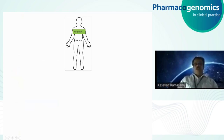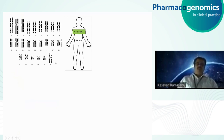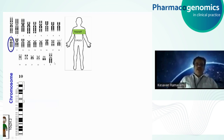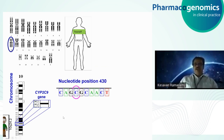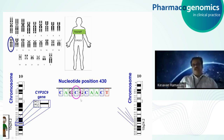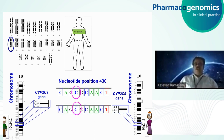The CYP2C9 gene is present in one of the copies of our 23 pairs of chromosomes, located on chromosome number 10, at position 10q24.2. We have 2 copies of the CYP2C9 gene. We are particularly interested in the nucleotide position 430 of exon 3 to see what allele is present. When analyzing a single gene, a particular nucleotide is called an allele. In the normal case, the C allele is present. These alleles from both gene copies combine to form the genotype.